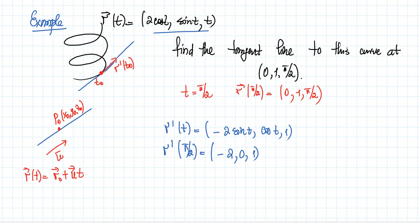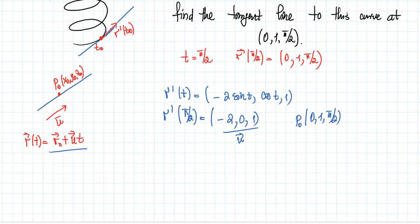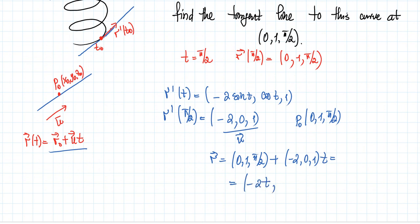Our vector parallel to the line has components (negative 1, 0, 1). We know one point with coordinates (0, 1, pi over 2), which is our p0. Using the line equation r equals r0 plus u times t, the equation of the tangent line is (0, 1, pi over 2) plus t times (negative 1, 0, 1), which gives (negative t, 1, pi over 2 plus t). This is the equation of the tangent line to the helix at the point corresponding to t equals pi over 2.